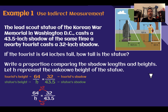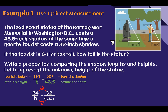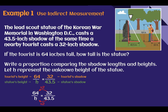Example one: Use indirect measurement. The scout statue of the Korean War in Washington D.C. casts a 43.5 inch shadow. At the same time a nearby tourist casts a 32 inch shadow. Here's our shadow and here's our shadow. If the tourist is 64 inches tall, how tall is the statue? We can use what we know and things that are easy to measure to figure out something that might not be quite so easy to measure.